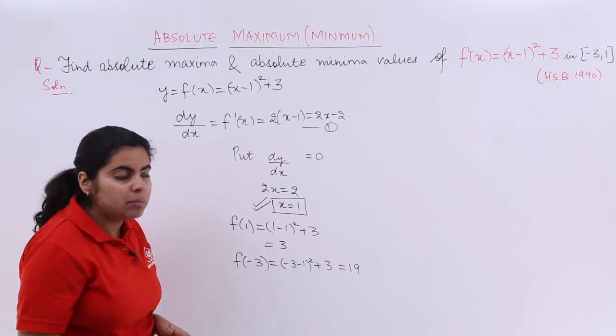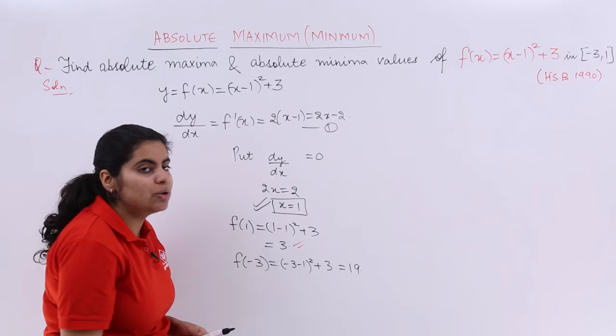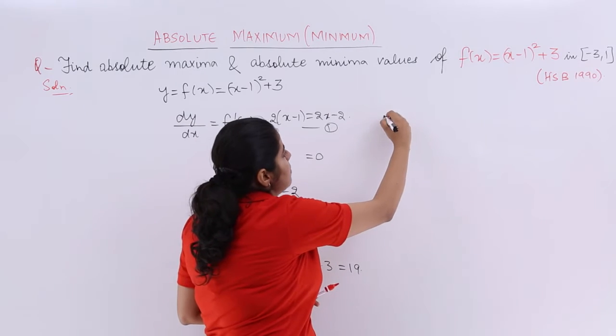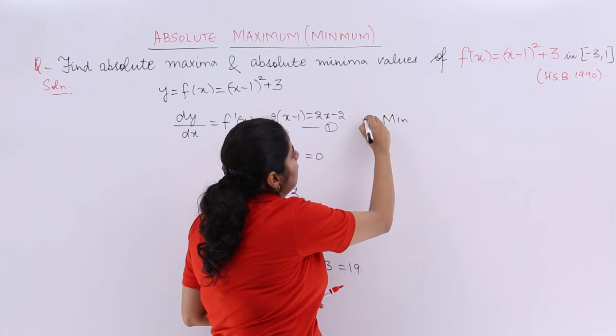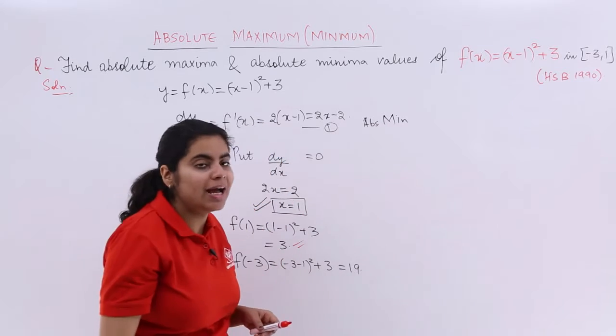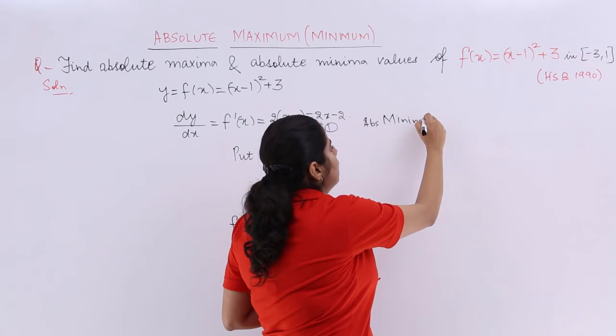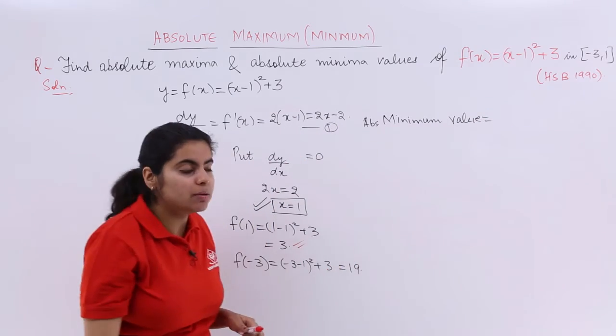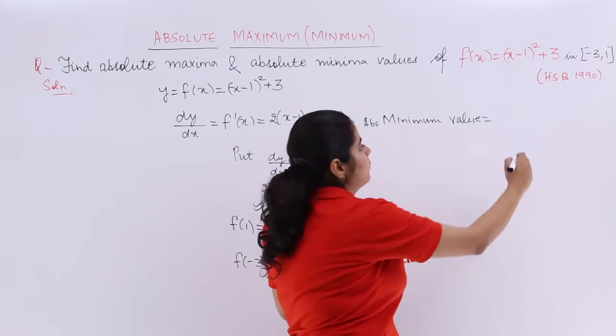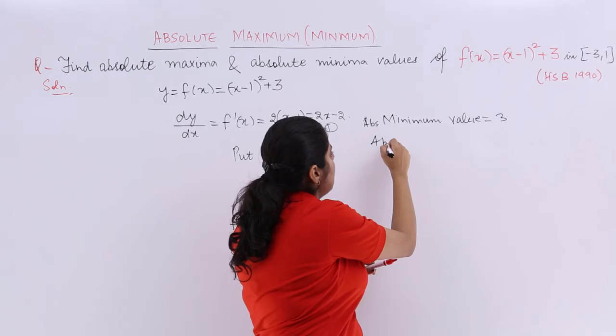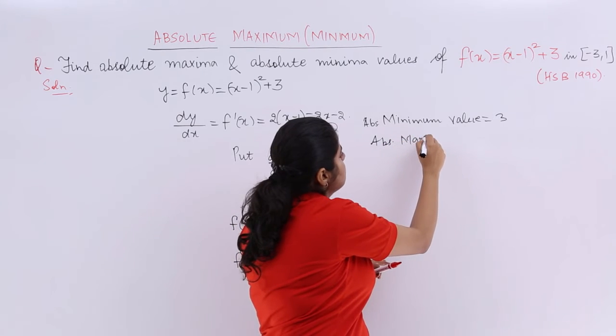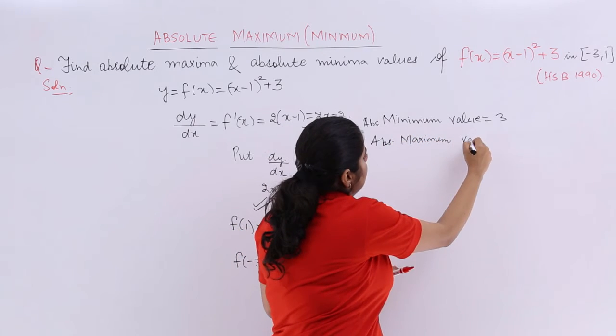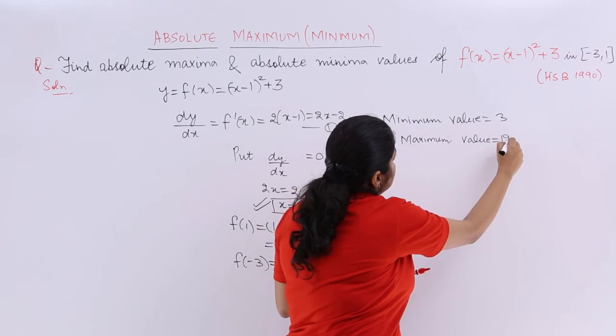So which is minimum out of these values? This value is minimum. So you write that minimum, which is nothing but absolute minimum. I write in short: absolute minimum value is 3 and absolute maximum value is 19.